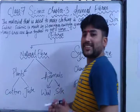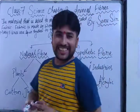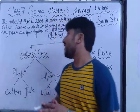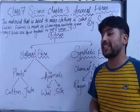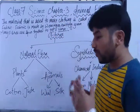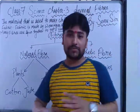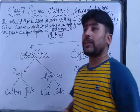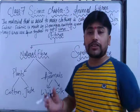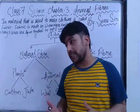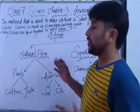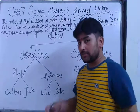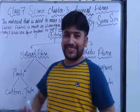Hello students, today we are going to discuss Class 7 Science Chapter 3. In Chapter 1 and Chapter 2, we studied about nutrition in plants and nutrition in animals. This chapter is a little bit different from nutrition.